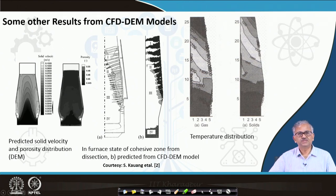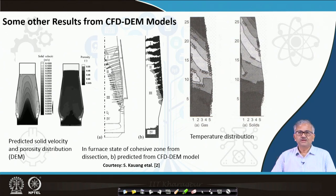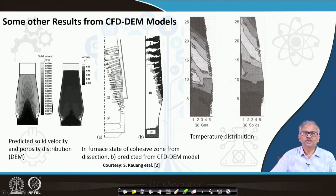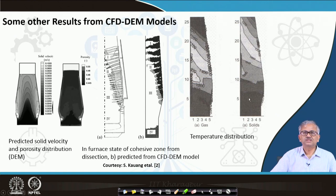The cohesive zone prediction is quite nice. The first figure is basically the in-furnace state of the cohesive zone from dissection — done in a Sweden MEFOS/LKAB laboratory where the experimental blast furnace is quenched by liquid nitrogen and dissected. The cohesive zone is found like this — the region where liquid formation is taking place appears black. The model-predicted cohesive zone from the DEM model shows the white region as the softening region, and there is a very close match. You can also calculate the complete temperature distribution from the main model — for gas and for solid.